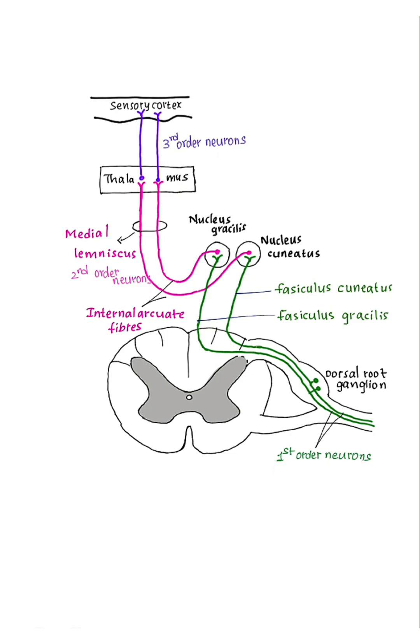First-order neurons: Their cell bodies are present within dorsal root ganglion of the spinal cord. Their central process enters the spinal cord through dorsal root and continues in the posterior white column of the spinal cord as Fasciculus gracilis and Fasciculus cuneatus.